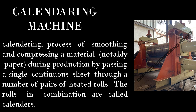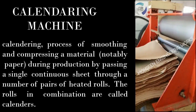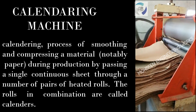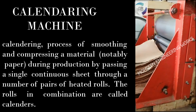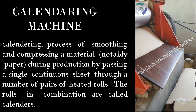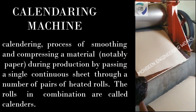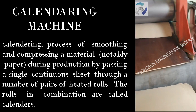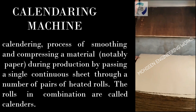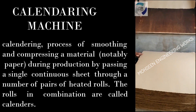Calendaring Machine. Calendaring is the process of smoothing and compressing a material, notably paper, during production by passing a single continuous sheet through a number of pairs of heated rolls. The rolls in combination are called calendars.